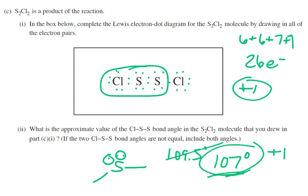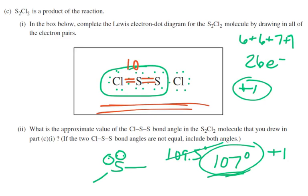Going back: if you had a wrong picture but did the correct bond angle for your incorrect picture, you still got credit for that. For example, some students drew double bonds with no lone pairs and said 180 degrees. They would not get credit for the Lewis dot diagram, but they would get credit for their angle as long as they were consistent.